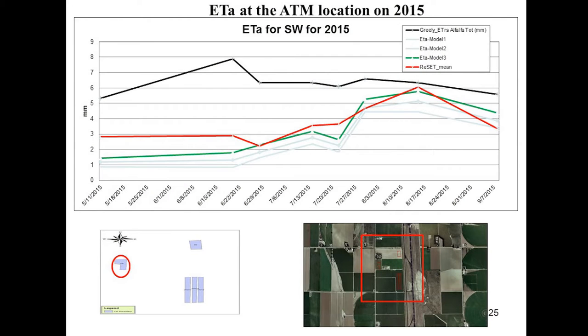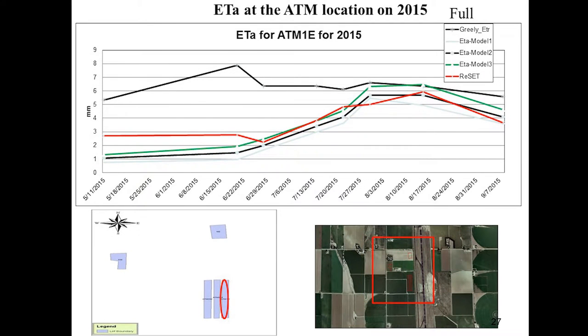2015 was a harder year, not as extreme as 2012, but harder. Looking at the full irrigation field, you can see rapid growth, and RESET is showing some stress compared to the alfalfa reference ET. The green line, based on the soil-adjusted vegetation index, follows better where you have some soil background appearing. Later, the model based on NDVI matches better. There's not too much variation, but consistently that's what's happening through the different treatments.